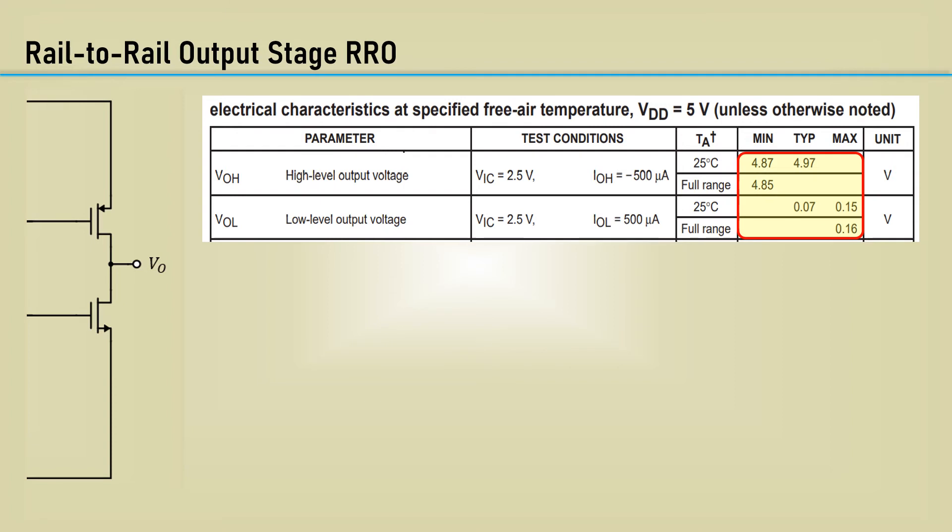PMOS and NMOS transistors have definite saturation limits. Also note the test conditions. That's only a high and low output current of 500 microamps.